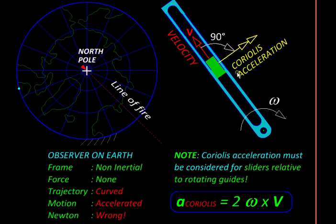In that case, the slider will experience a Coriolis acceleration given by two times the cross product omega bar cross v bar. Alternatively, the direction of Coriolis acceleration can also be found by rotating the velocity vector by 90 degrees in the direction of omega.